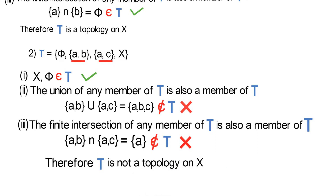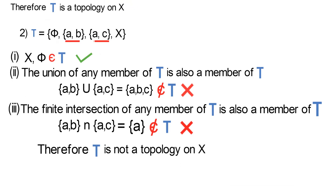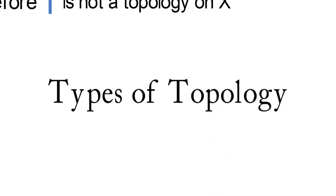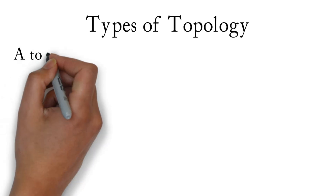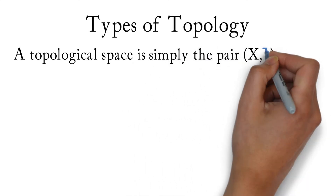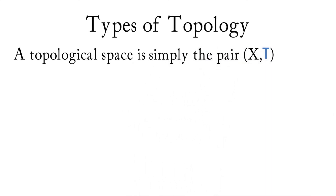Having these examples done, we will dive right into what we have for today: types of topology. First, we have to recall from our previous video the definition of a topological space, which states that a topological space is simply the pair of the entire set X and tau. With this definition in mind, we will list the types of topology.